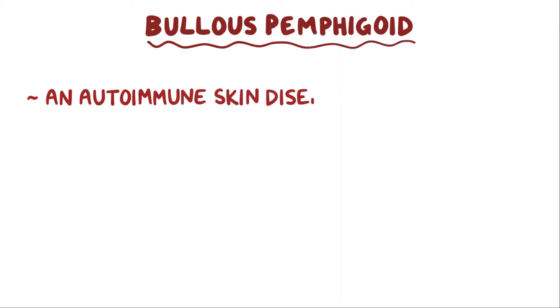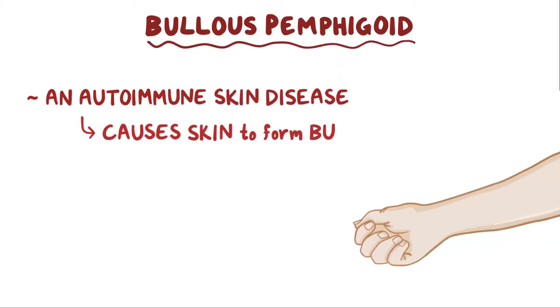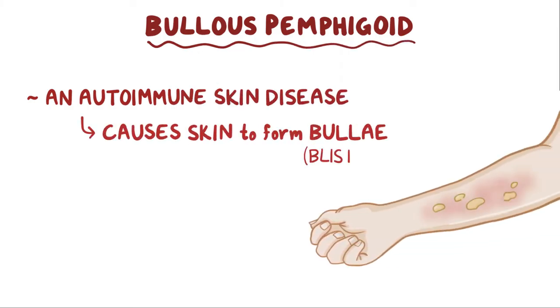Bullous pemphigoid is an autoimmune skin disease that causes the skin to form bullae, or blisters.